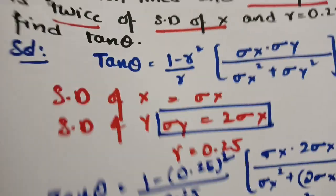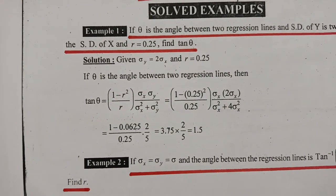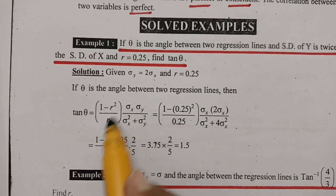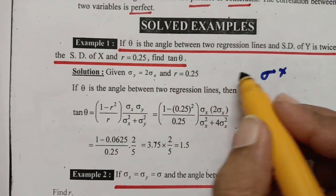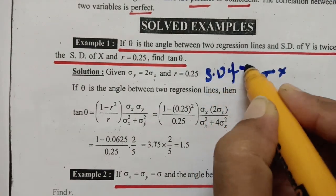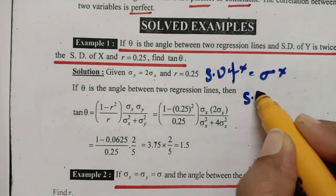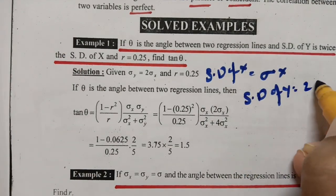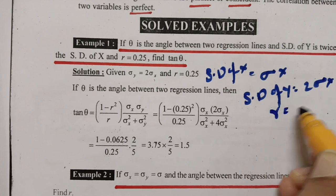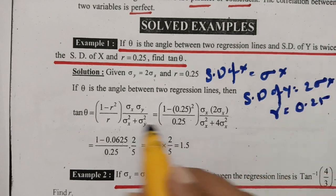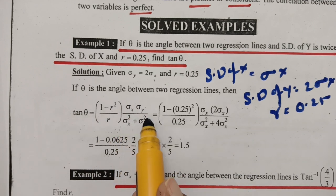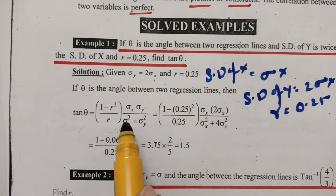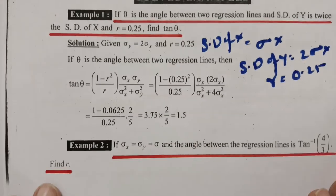Therefore tan θ = 3.75 × 2/5 = 1.5, but checking with the textbook this value is 0.15. The steps are: sigma x as given, sigma y = 2 sigma x, r = 0.25, and the tan θ formula is (1 − r²)/r · sigma x · sigma y / (sigma x² + sigma y²).